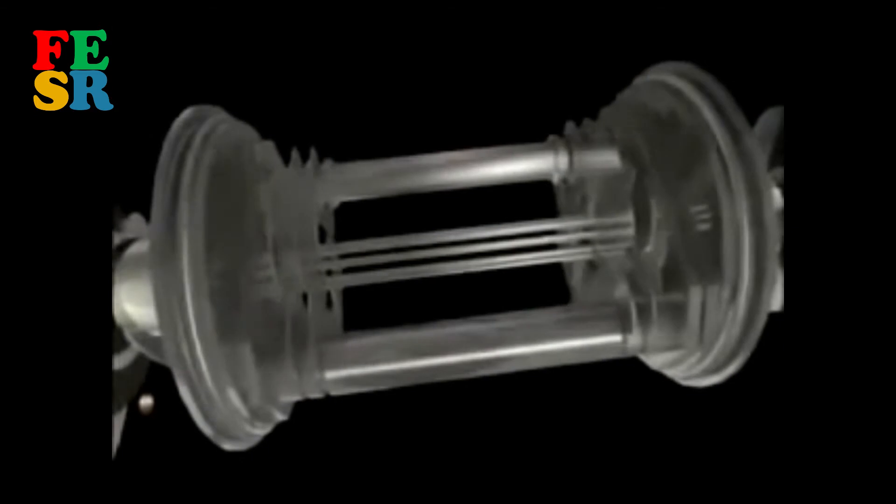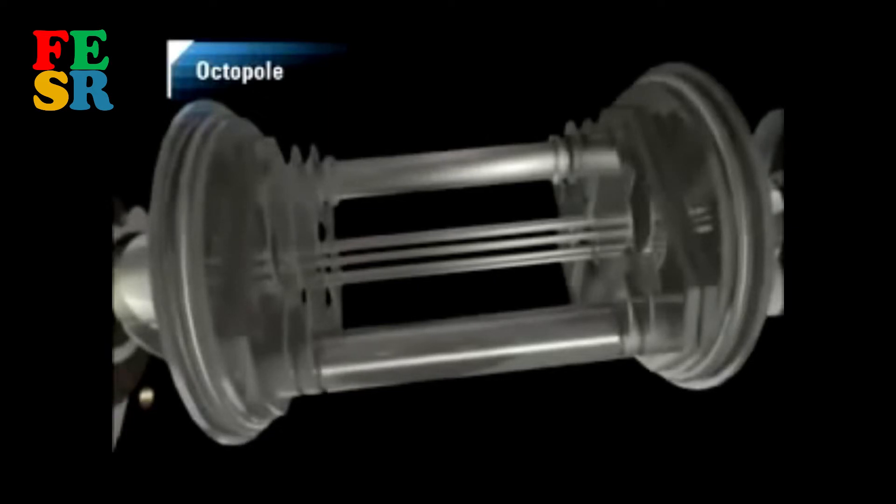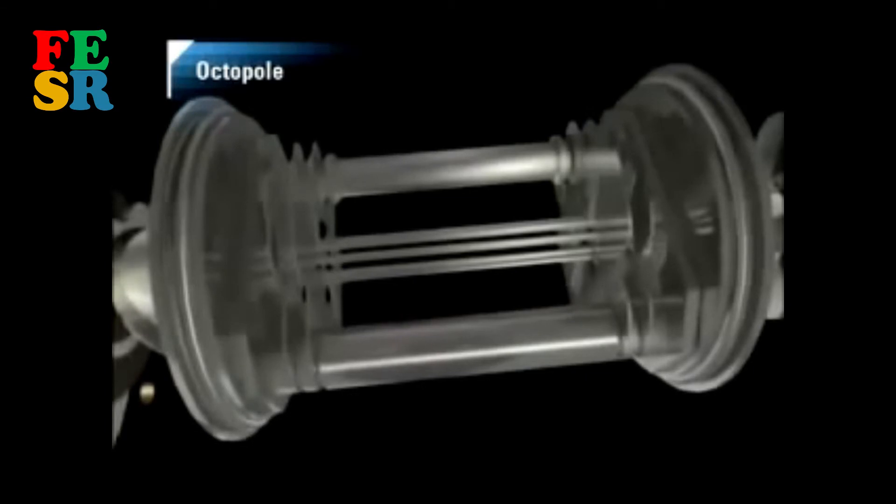The ORS is unique in using an octopole ion guide in the cell rather than the hexapoles and quadrupoles used in other cell ICP-MS systems. Octopoles are small, reducing the size of the cell and allowing operation at higher pressure relative to other systems.